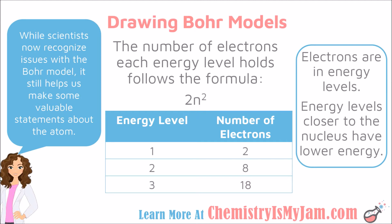For example, for the first energy level, if you plug a 1 in for n: 1 squared is 1, times 2 gives you 2 electrons. So the first energy level can hold up to 2 electrons. For the second energy level, plug a 2 in for n: 2 squared is 4, times 2 gives me 8. The second energy level can hold up to 8 electrons. For the third energy level, 3 squared is 9, times 2 is 18. The third energy level can hold up to 18 electrons — it doesn't have to have 18, but it can't have more than 18. It is full with 18 electrons.